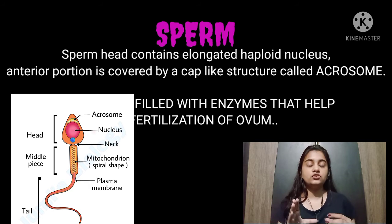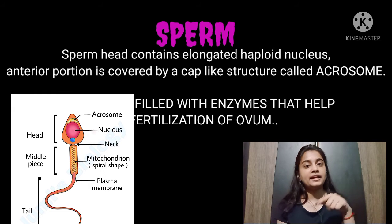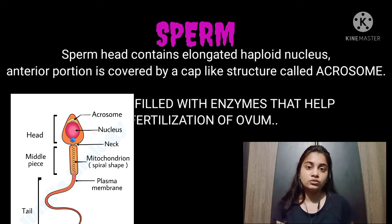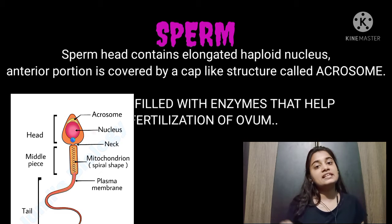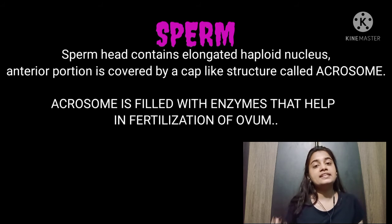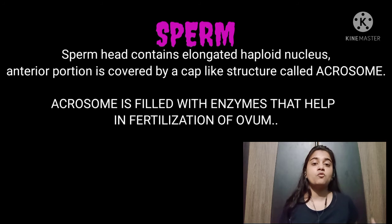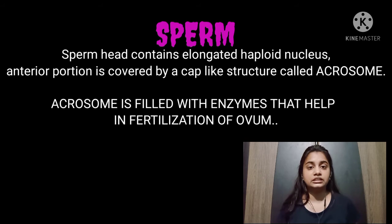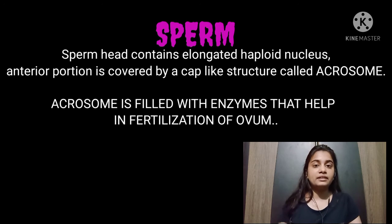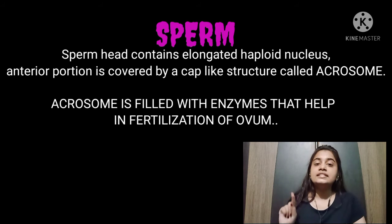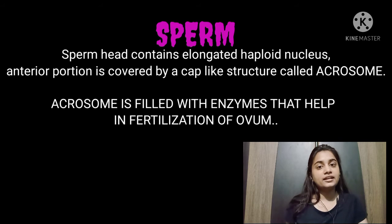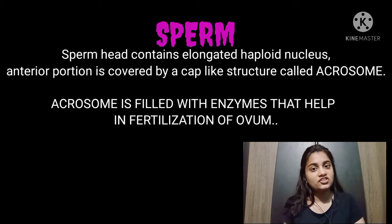In the sperm head, the upper anterior portion has a cap-like structure, as seen in the figure. This cap-like structure is called the acrosome. The acrosome is filled with enzymes. When the sperm fertilizes or fuses with the egg, these enzymes help in fertilization.